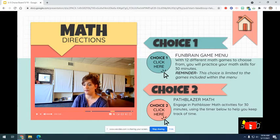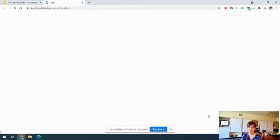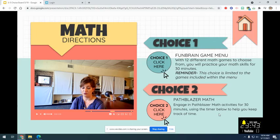If you're selecting choice two, you can start your timer here for 30 minutes and then click here. You will be redirected to ClassLink where you will sign in. Then go ahead and go to Pathblazer and click on math.